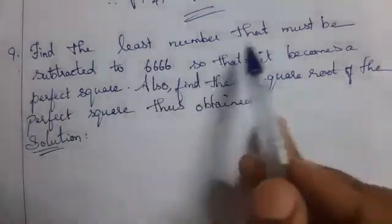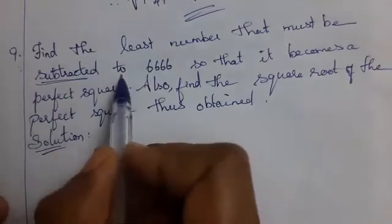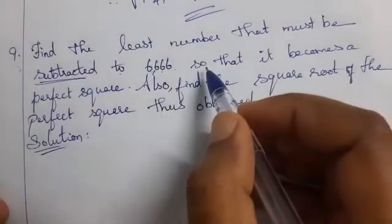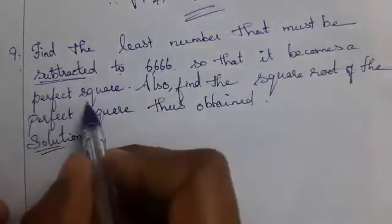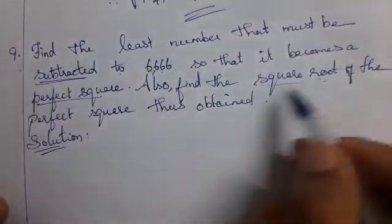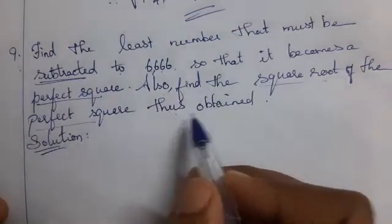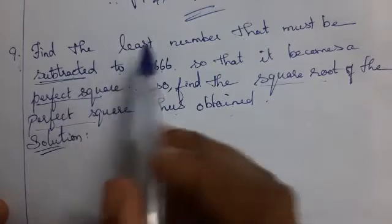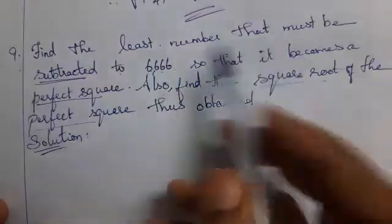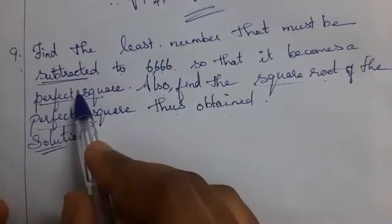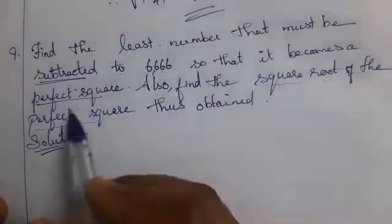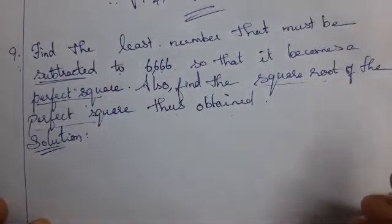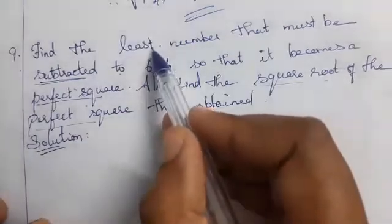Find the least number that must be subtracted from 6,666 so that it becomes a perfect square. Also, find the square root of the perfect square thus obtained. You must find the least number that must be subtracted to make it a perfect square, then find the square root of that.